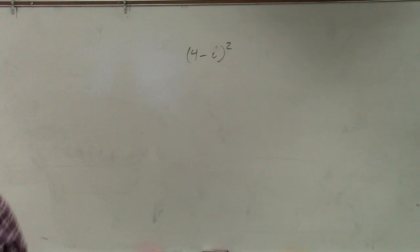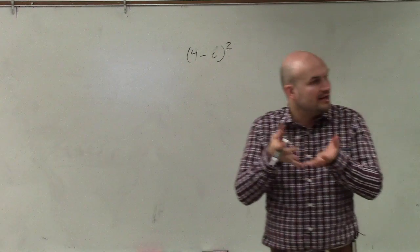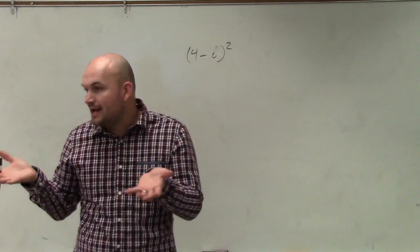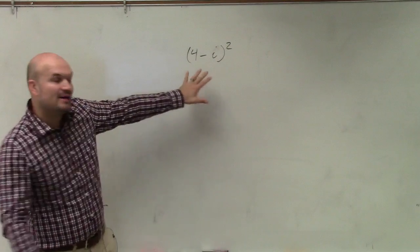So for this example, ladies and gentlemen, we have (4 - i)². Please remember that whenever you have a number, an expression, or any kind of quantity that is squared, that means that quantity multiplied by itself.